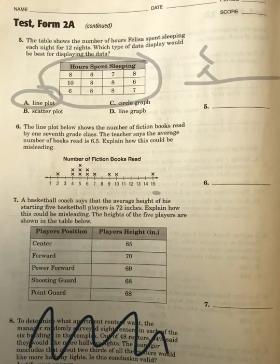Number 7, the basketball coach says that the average height of his five basketball players is 72 inches. Explain how that could be misleading. The heights of the five players are in the table below.